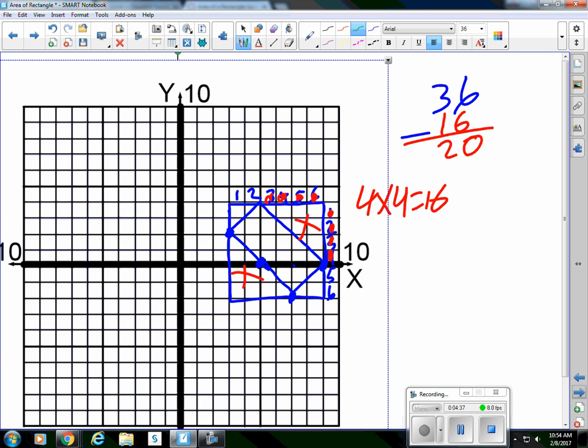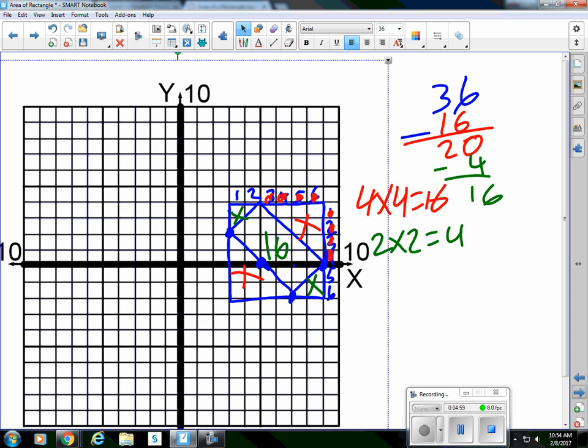And now this triangle and this triangle, they are two by two. So put them together and they become a square that's two by two for an area of four. So if I subtract four from that, then I have 16 left over. So the area of that rectangle is 16. That's not the only way to do that, but that's one way to do it.